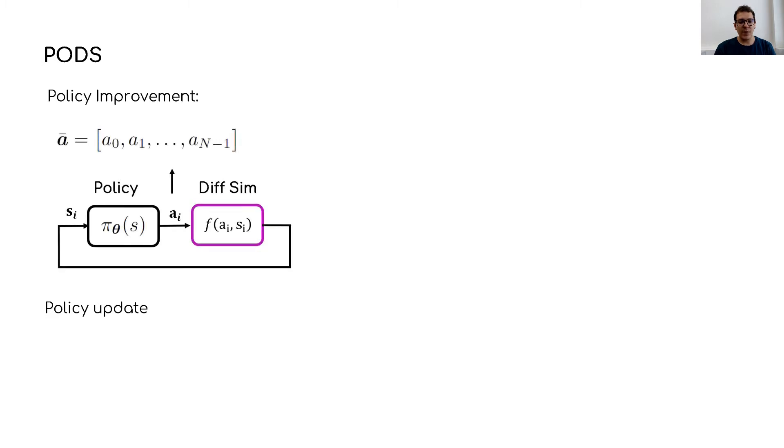To avoid such problems, our approach consists of two steps: a policy improvement step in trajectory space and a policy update in parameter space. During the policy improvement, we first roll out policy π to gather a sequence of actions to initialize policy ā, defined in trajectory space. That way, the value function of both policies is the same initially, and we can then proceed to update ā using the gradient of the value function in trajectory space.